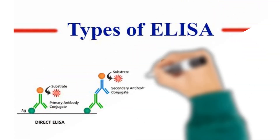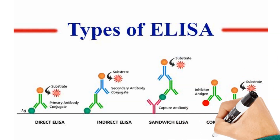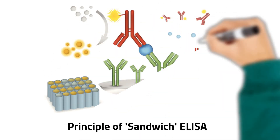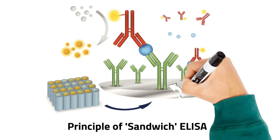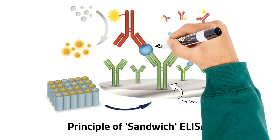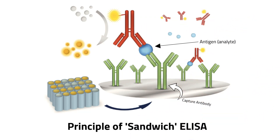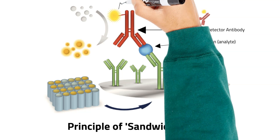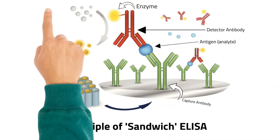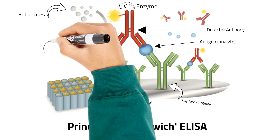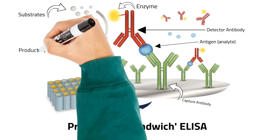ELISA, or enzyme-linked immunosorbent assay, can be used in four different formats such as sandwich, competitive, direct, and indirect assays. The sandwich format is widely used, which employs two types of antibodies known as capture and detector antibodies. The capture antibodies are immobilized on the plate and the detector antibodies are labeled with an enzyme. The capture and detector antibodies bind to their target antigens from the sample to form a sandwich antigen-antibody complex. A chromogenic substrate is then added to react with the labeled enzyme, which produces signals in the form of colored products. The signal produced is measured and correlates with the concentration of the target analyte present in the sample.